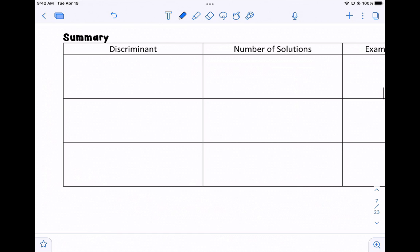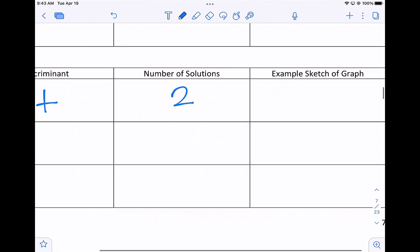So when the discriminant is positive, there are two solutions. And a sketch and a graph might look something like this. Two answers, it crosses twice.